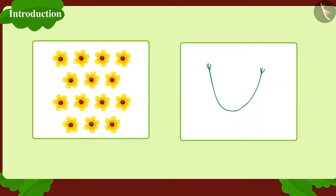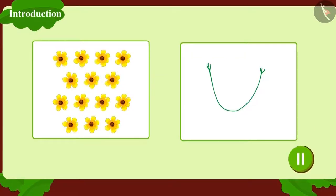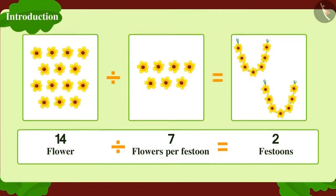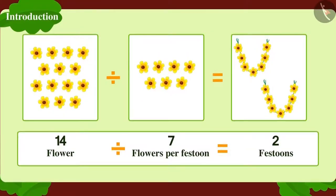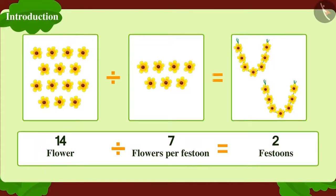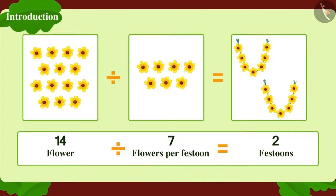Children, can you find the answer to this question and write it in the form of division? Well done children, you have given the right answer! If we divide fourteen flowers into festoons of seven flowers each, we will get two festoons.